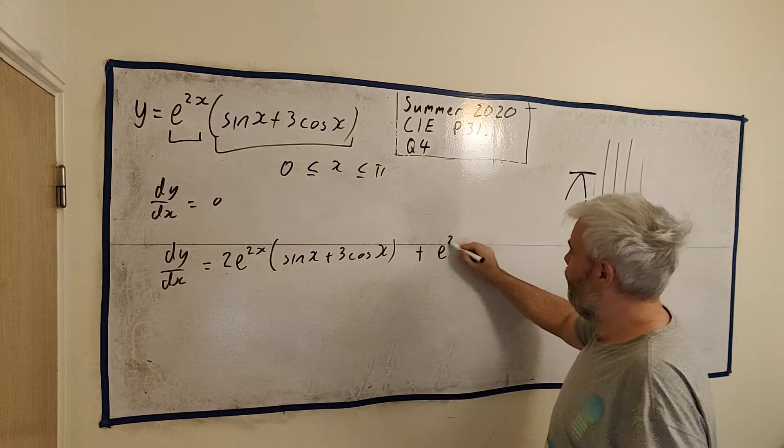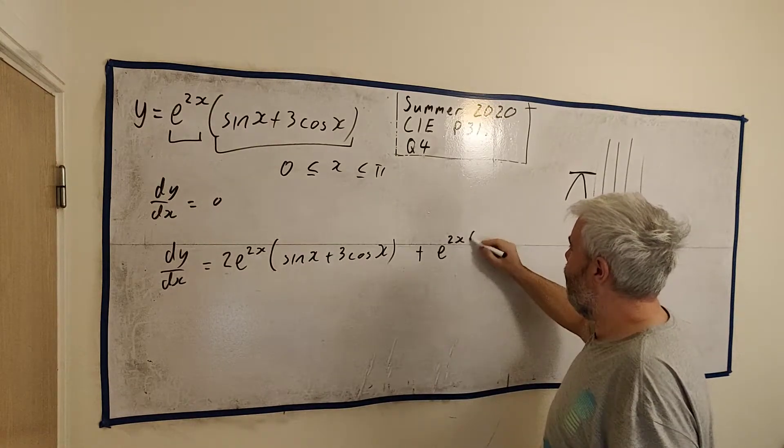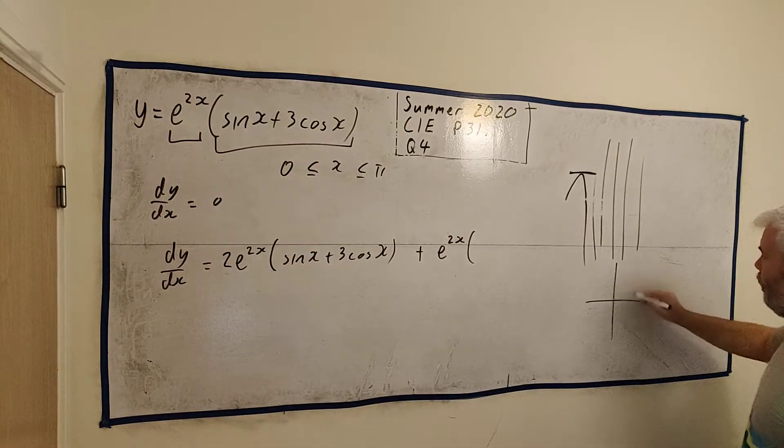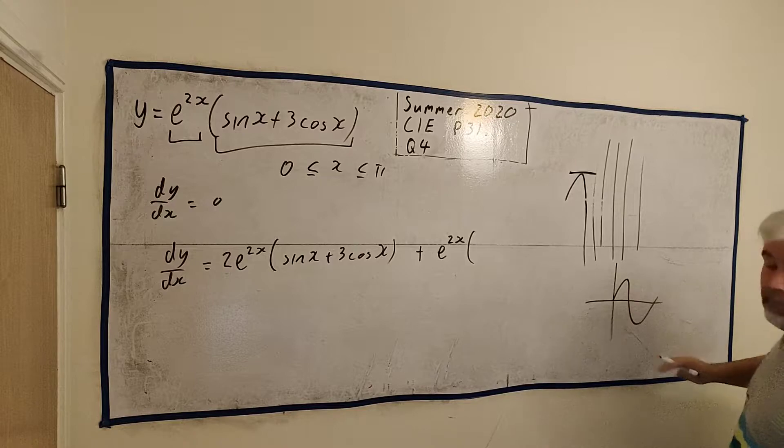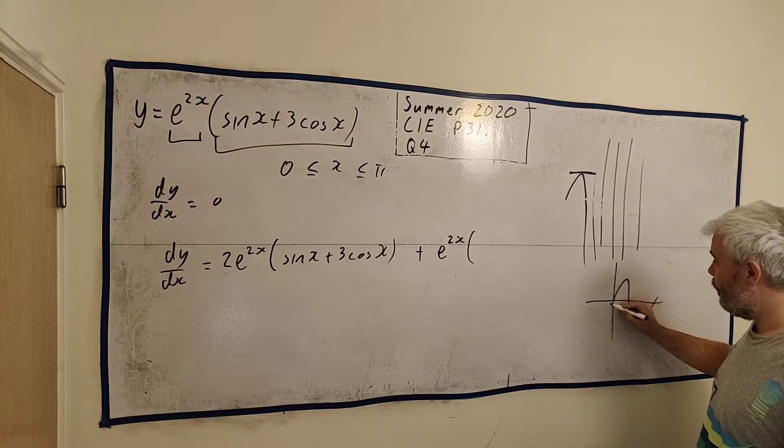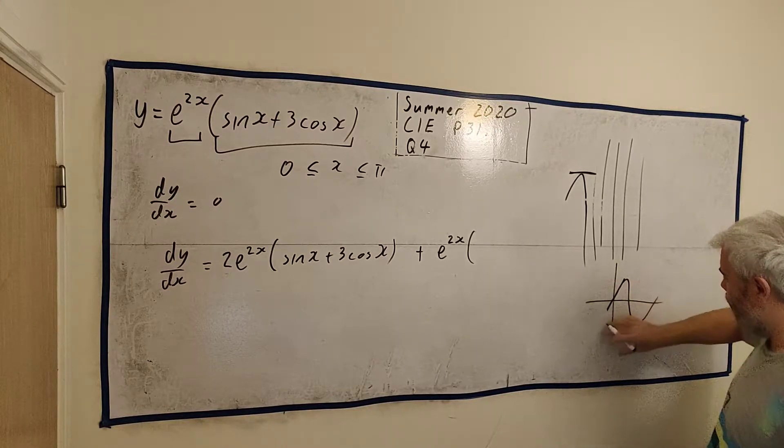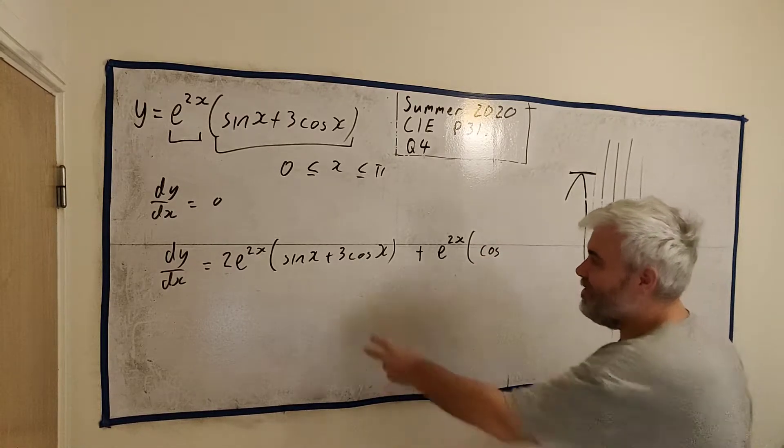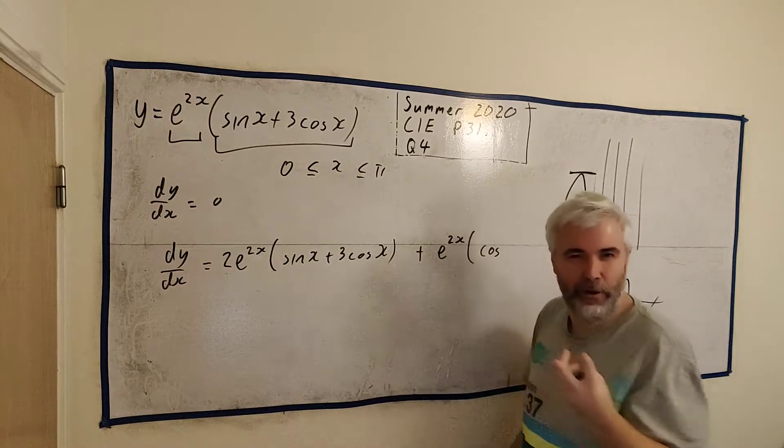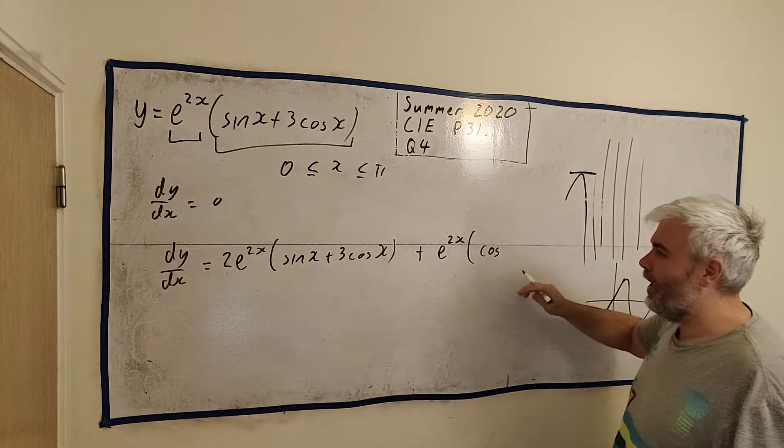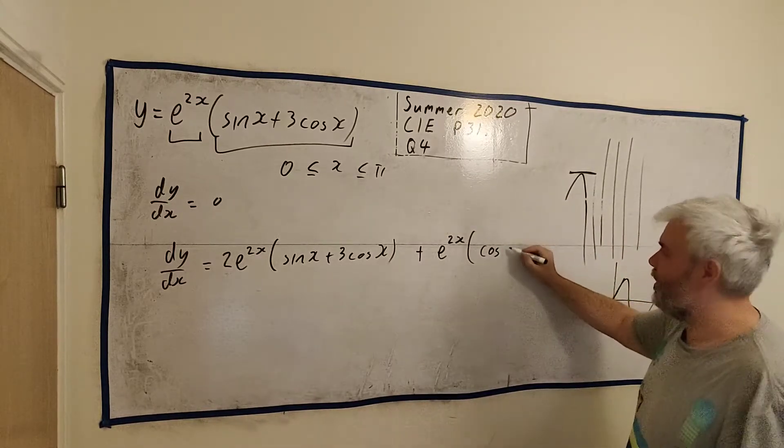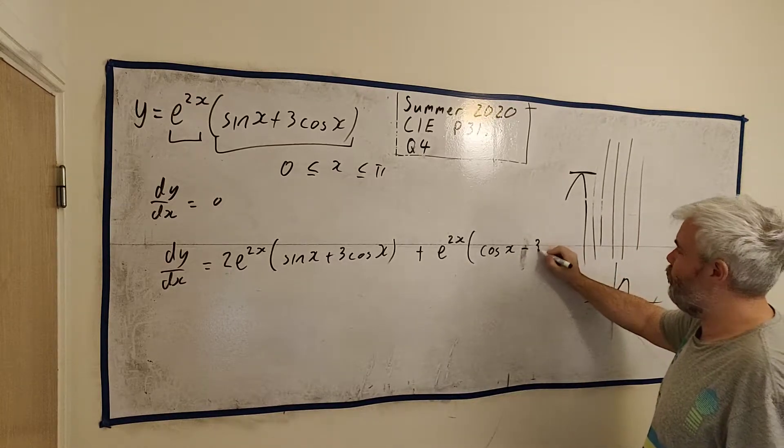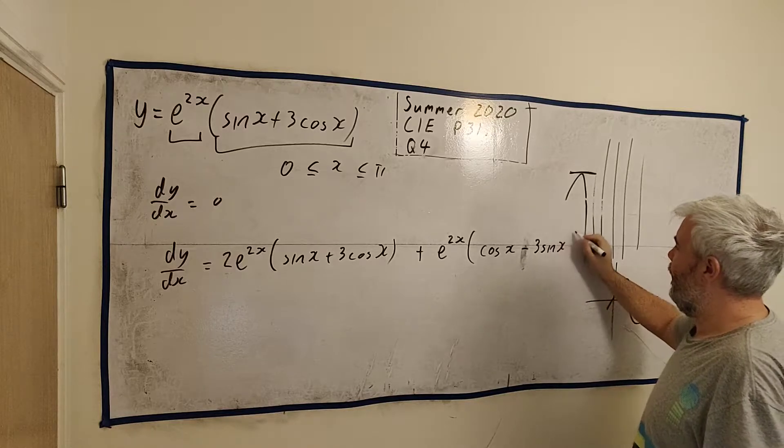And then the product rule tells us we add, we differentiate the second one and leave the first one alone. Let me write the first bit first. And then we'll differentiate this second one. The derivative of sine x, I always forget. What I sometimes do is I just draw a quick picture of sine and think, well the derivative at 0 would be plus 1. So that means it must be cosine, plus cosine. Sine will turn into plus cosine. And cosine will turn into minus 3 sine x.